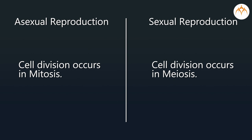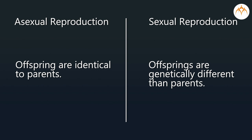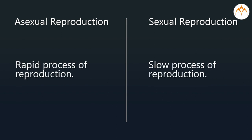In asexual reproduction, the new organisms formed are identical to their parents in characteristics. On the other hand, in sexual reproduction there are two parents — male and female, or father and mother. They produce haploid gametes by meiosis. These gametes unite to produce a diploid zygote, and the new generation is formed from the zygote. The offspring show some characteristics common with their parents but also show genetic variations.